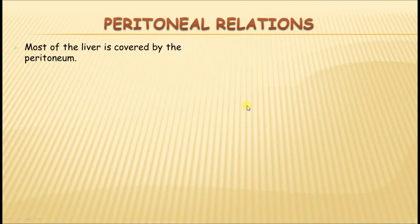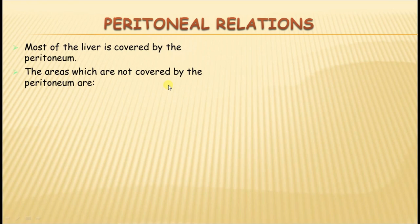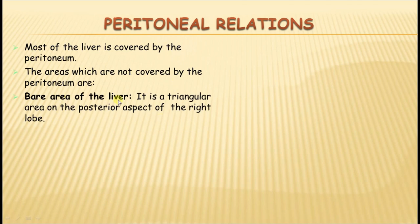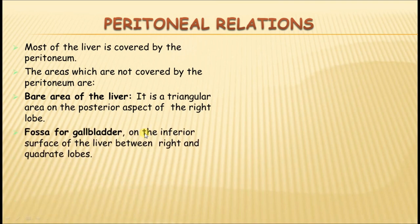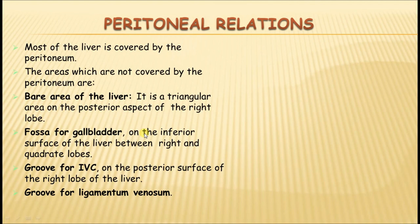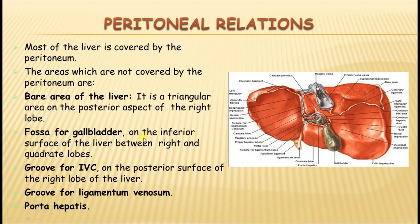The liver is an intraperitoneal organ covered by peritoneum. The non-peritoneal areas include: the single large bare area, the groove for IVC, the fossa for gallbladder, the groove for ligamentum venosum, and the porta hepatis (only its lips are covered by the anterior and posterior layers of the lesser omentum). These are all the bare areas of the liver apart from the principal large bare area, which is also a site of portosystemic anastomosis.